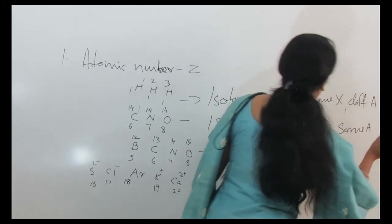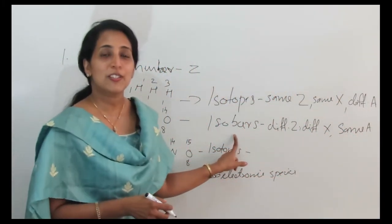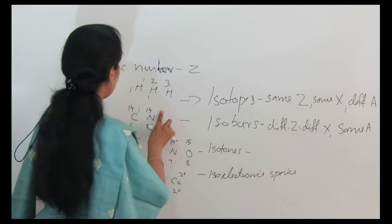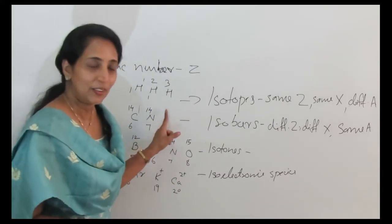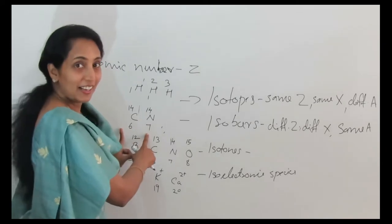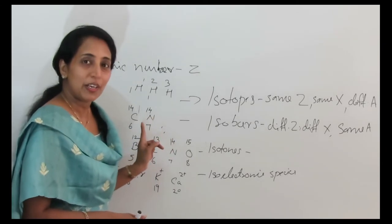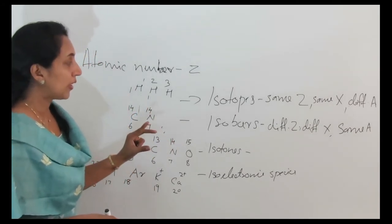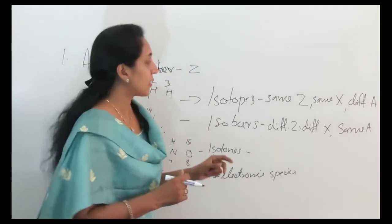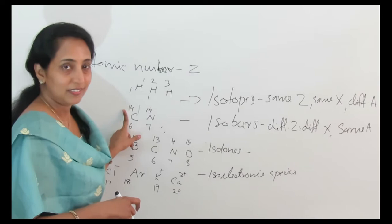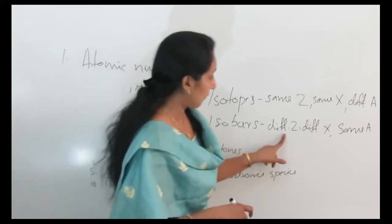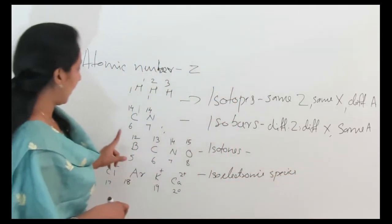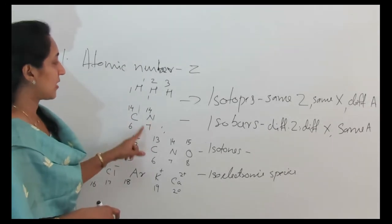Isobars have the same mass number but different atomic number, so they are different elements with different symbols. For example, Carbon-14 has atomic number 6 and mass number 14, and Nitrogen-14 has atomic number 7 and mass number 14. The mass number is the same but the atomic number is different — these are isobars. Iso means same mass number but different atomic number and different symbols.